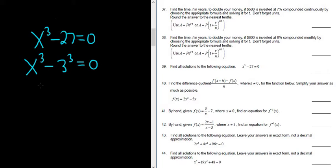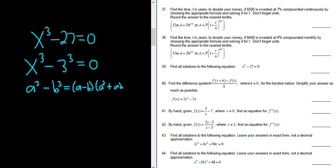There is a formula. If you have a cubed minus b cubed, the formula says that it's a minus b — you keep the sign — and then a squared, and then you switch the sign, so plus ab plus b squared. We can use this formula to work this out. So a here is x, and b here is 3.